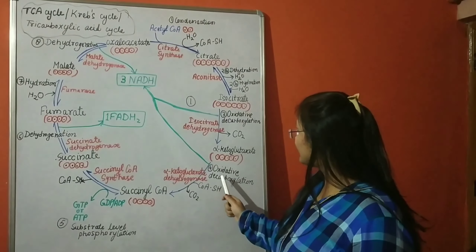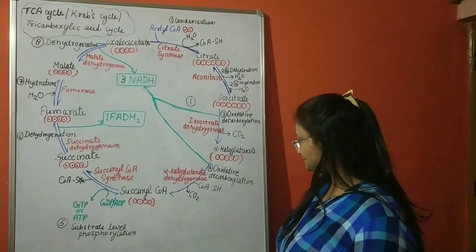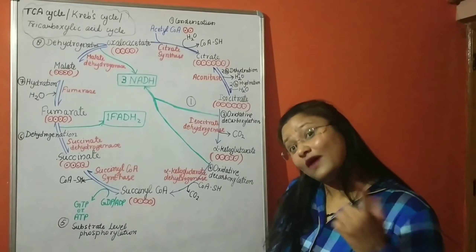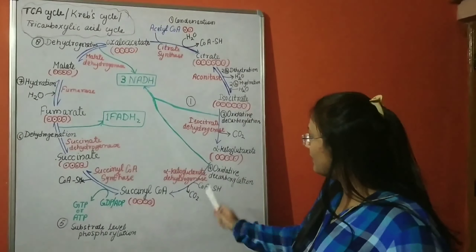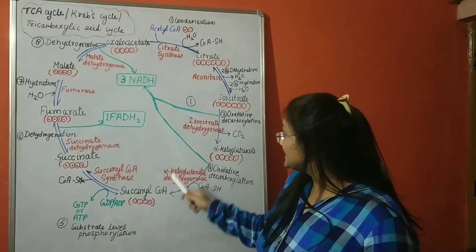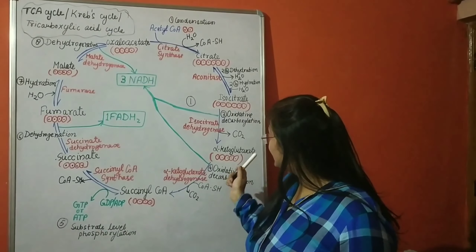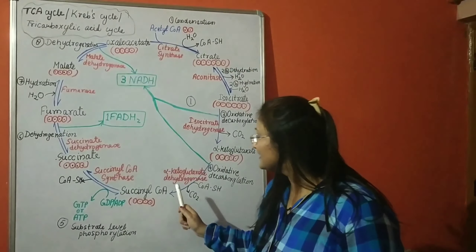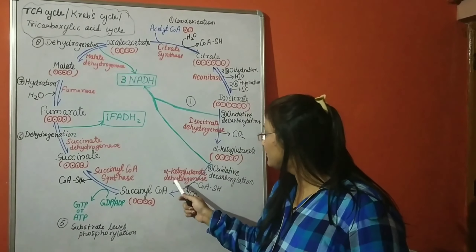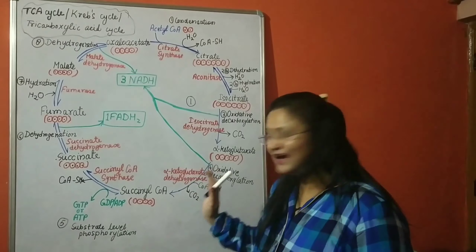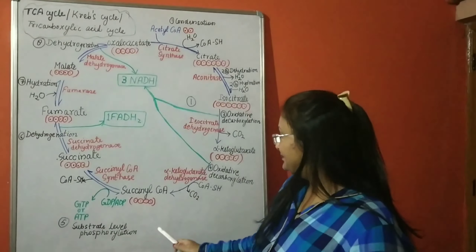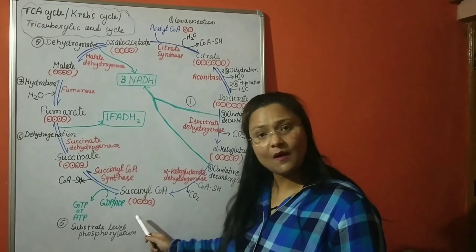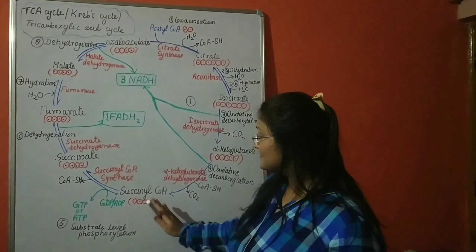The fourth step is another oxidative decarboxylation — one more carbon atom is removed in the form of carbon dioxide. Alpha-ketoglutarate is converted into succinyl-CoA, catalyzed by alpha-ketoglutarate dehydrogenase. One carbon has been removed, so succinyl-CoA is a four-carbon compound. In this step, a second NADH is also formed, so we now have two NADH molecules total.